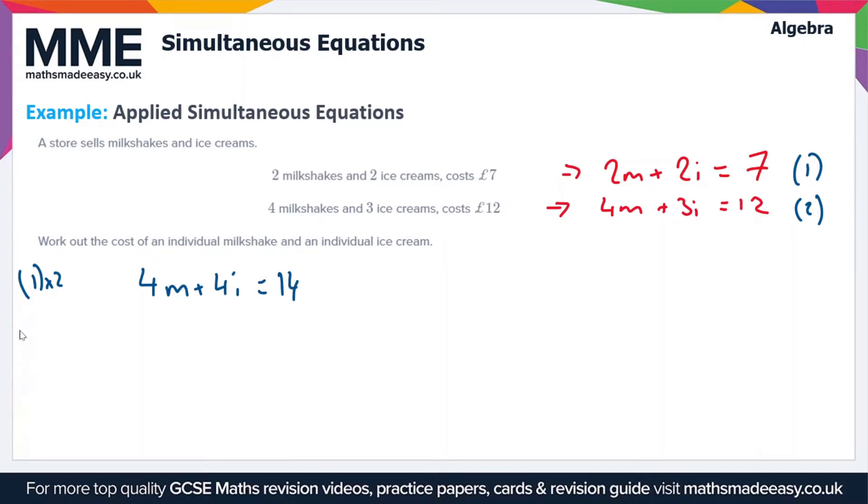If we're going to do equation 1 times 2 minus equation 2, we're going to subtract the second equation, 4m plus 3i equals 12. If we subtract the second equation from this one on the top, we're going to get no m's, and 4i minus 3i gives us i, and 14 minus 12 equals 2.